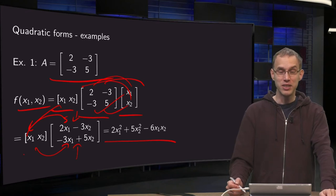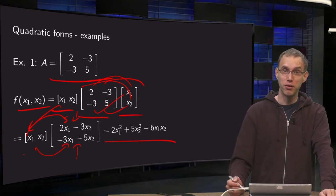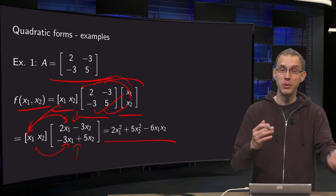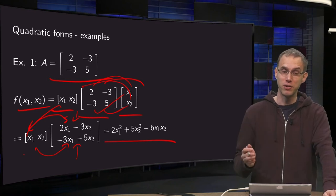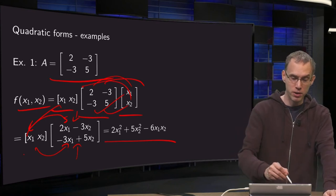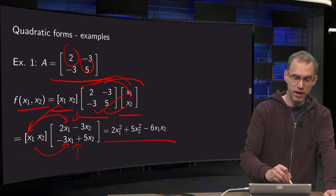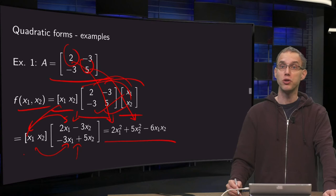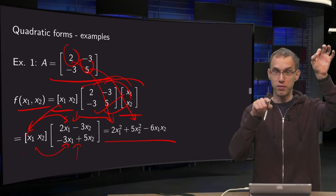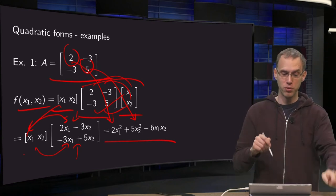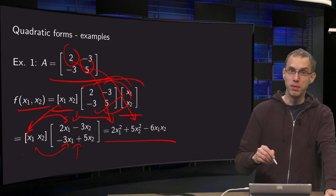Now you recognize that you can actually write down this quadratic form immediately. The 2 and the 5, the diagonal elements, come here for the x1 squared and the x2 squared. So 2 and the 5 give you 2x1 squared and 5x2 squared.